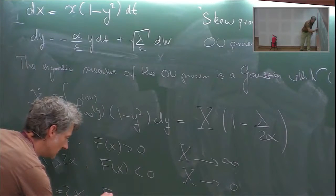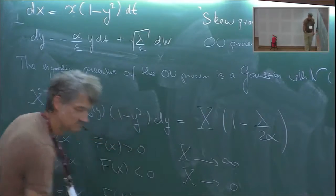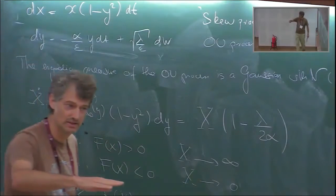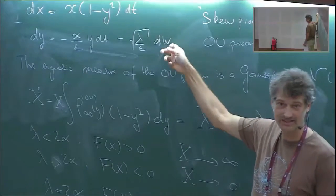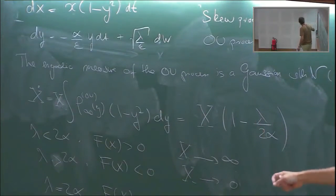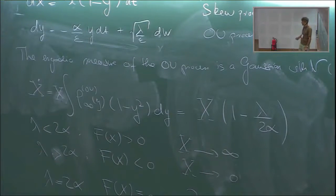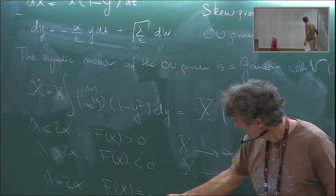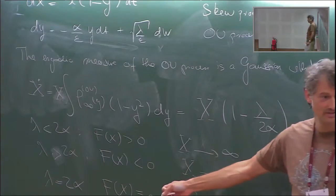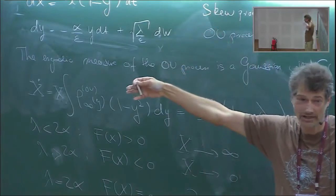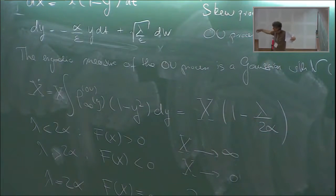When λ = 2α, F̄(x) = 0, so the average equation says x doesn't do anything. Clearly that can't fully be the case because x is constantly kicked. The averaging result is valid on timescales of order one, but at long times there will be excursions. So if we want to learn about these stochastic effects, we have to go to a longer timescale where these fast kicks have time to accumulate and give deviations from the average behavior.